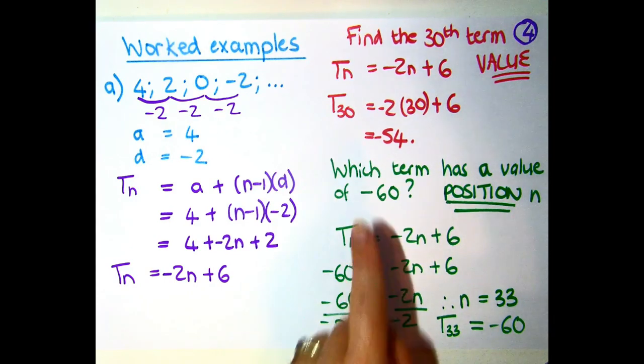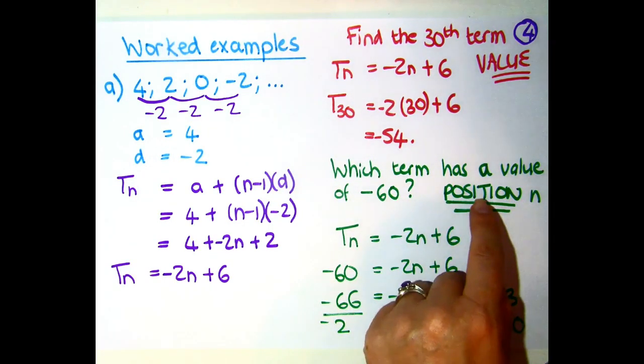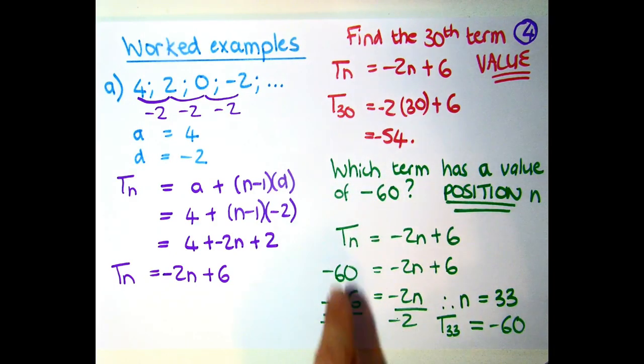When you get given it the other way around and they say which term has a value of negative 60, they're asking you for the position and they're giving you the Tn. They're giving you the Tn is negative 60, and they're saying, well, when Tn is negative 60, what in fact is n, and you're plugging that in and solving for n.